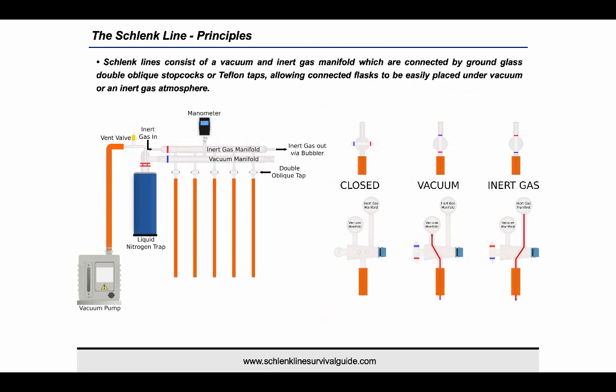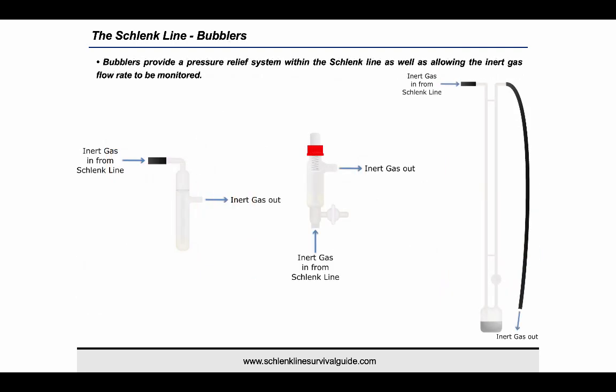Schlenklines consist of a vacuum manifold, which is attached to a vacuum pump, and an inert gas manifold, which is attached to a source of dry and purified inert gas. The two manifolds are connected by ground glass double-oblique stopcocks or Teflon taps, which allow connected flasks to be easily placed under vacuum or an inert gas atmosphere. A liquid nitrogen trap is situated before the vacuum pump to condense any solvent or other volatile species. A manometer or vacuum gauge can also be used to monitor the vacuum pressure within the Schlenkline. The inert gas leaves the Schlenkline via a bubbler, which provides a pressure relief system as well as allowing the inert gas flow to be monitored.